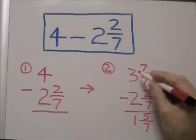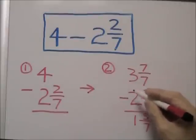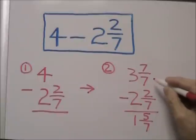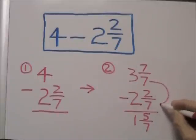So now we've rewritten our problem so that it's 3 and 7 sevenths minus 2 and 2 sevenths. We've also created like denominators.